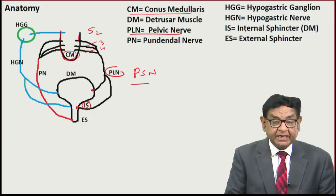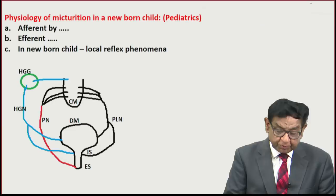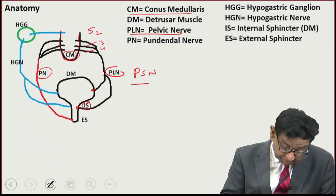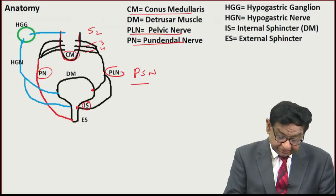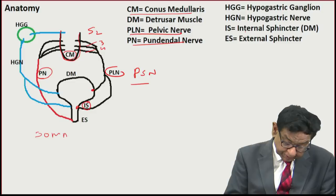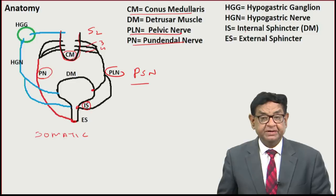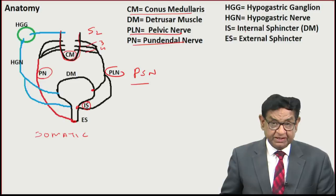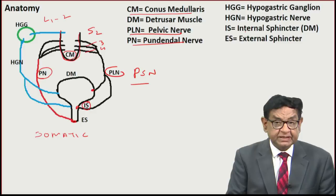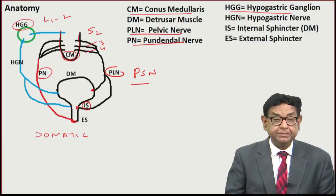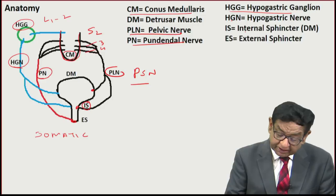From the same S2, S3, S4 segments, roots also arise and join to form the pudendal nerve, which is a somatic nerve. It supplies only the external sphincter. The external sphincter has striated muscle, that's why it has somatic supply via the pudendal nerve. From L1, L2 segments, roots arise and go to the hypogastric ganglia, forming the hypogastric nerve, which is a sympathetic nerve.